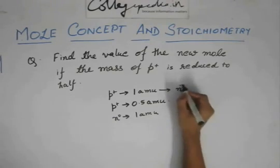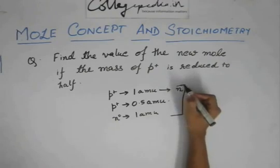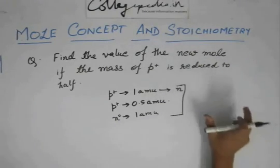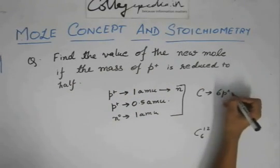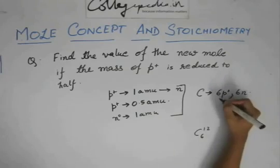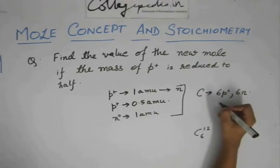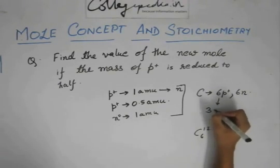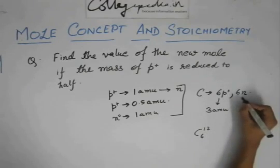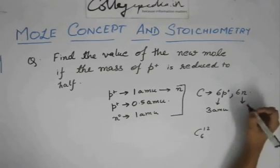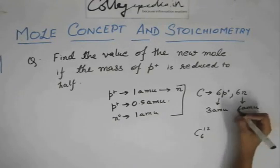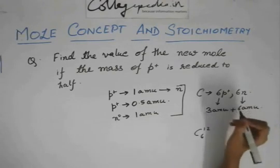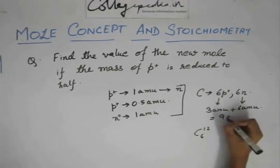Since we used the carbon atom to define the mole, we must use carbon again to redefine the new mole. Carbon contains 6 protons and 6 neutrons. The mass of 6 protons would normally be 6 amu, but now it becomes 3 amu. The mass of 6 neutrons remains 6 amu. So the new mass of this carbon atom would be 9 amu.